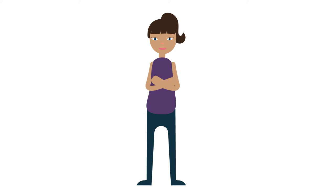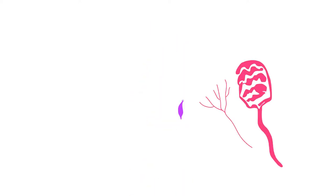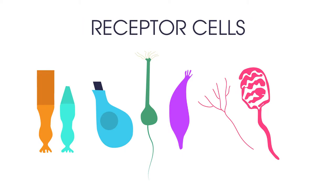For example, if you are too cold, you may put a jumper on. Sense organs in animals have groups of receptor cells, which detect specific stimuli.